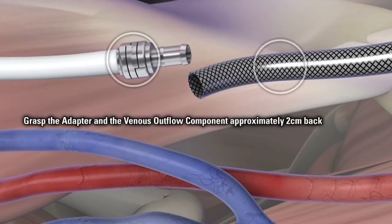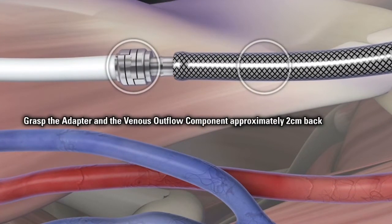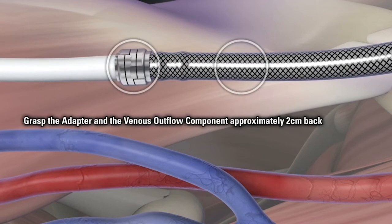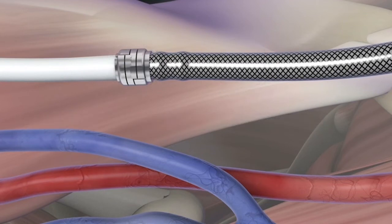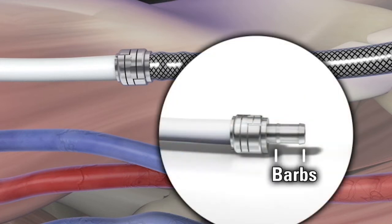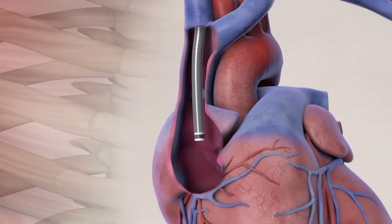Hold the adapter and the venous outflow component approximately 2 cm from the cut end. Push the venous outflow component over the barbs of the adapter's venous outflow component end. The venous outflow component must advance over both barbs of the adapter's venous outflow component end. After connection, verify the position of the venous outflow component.